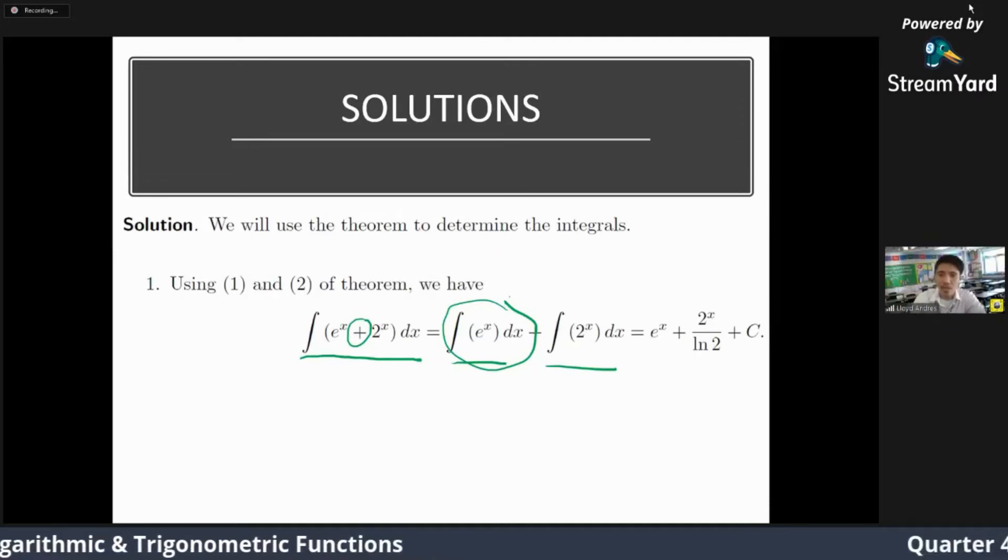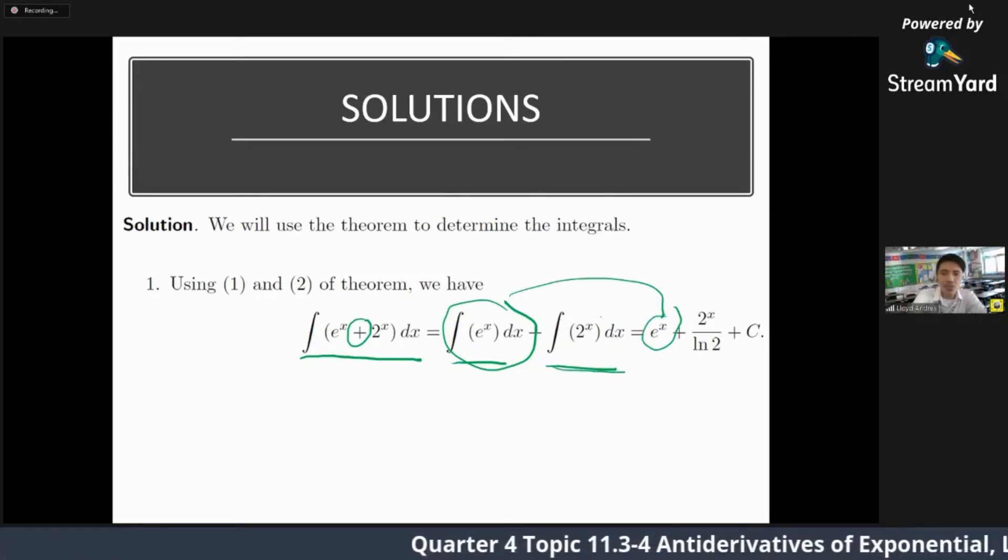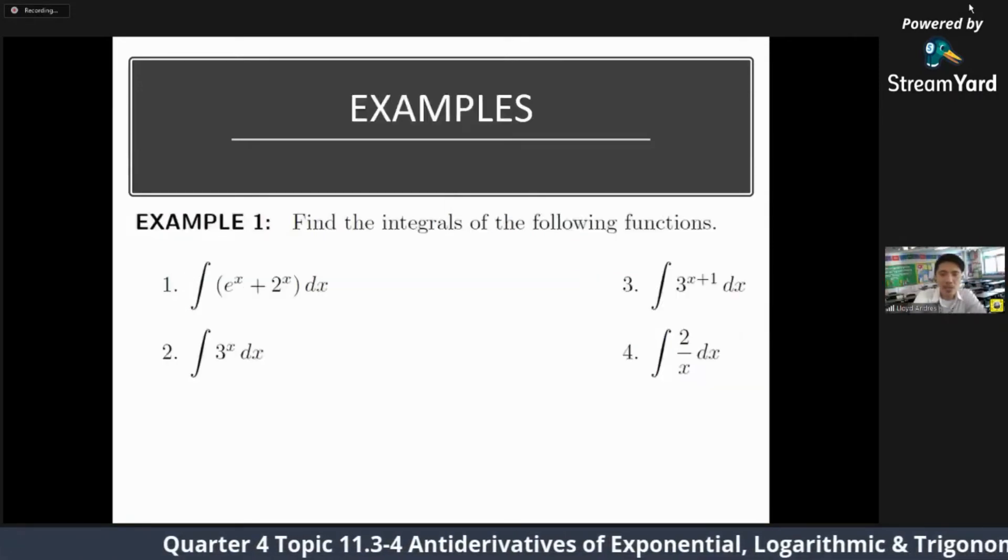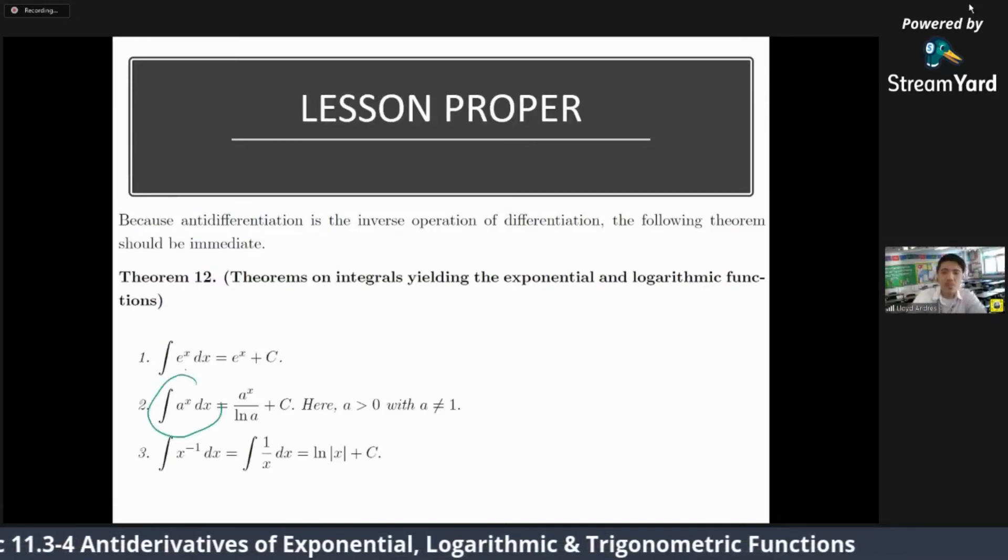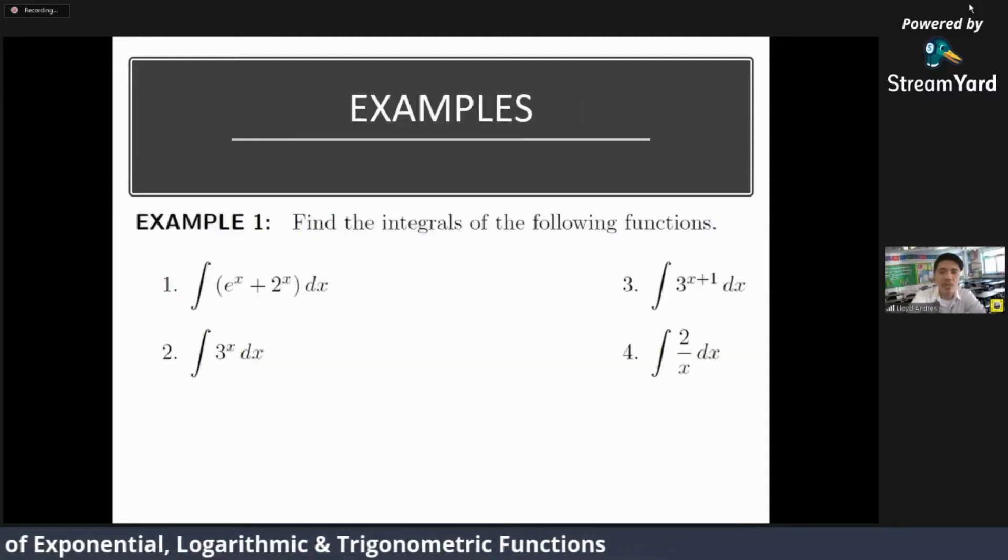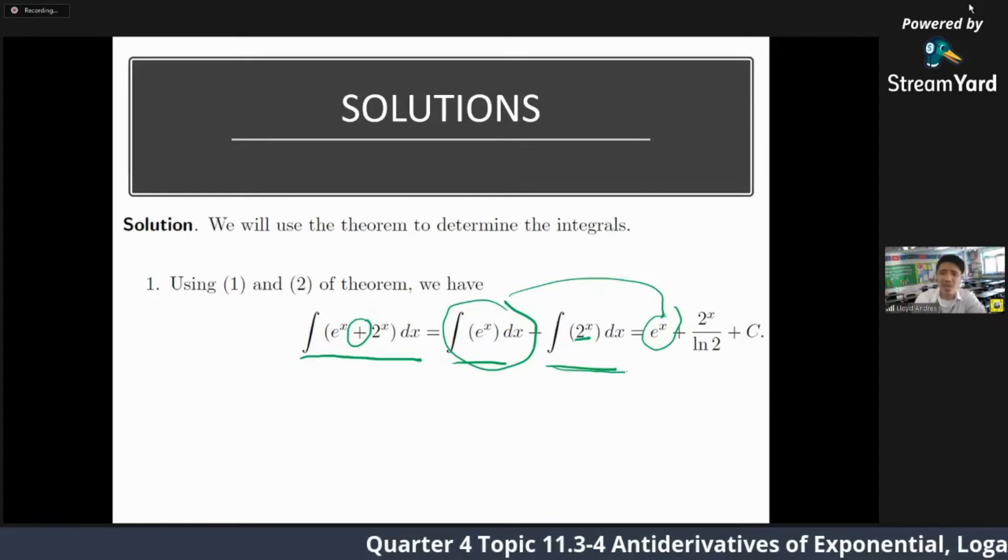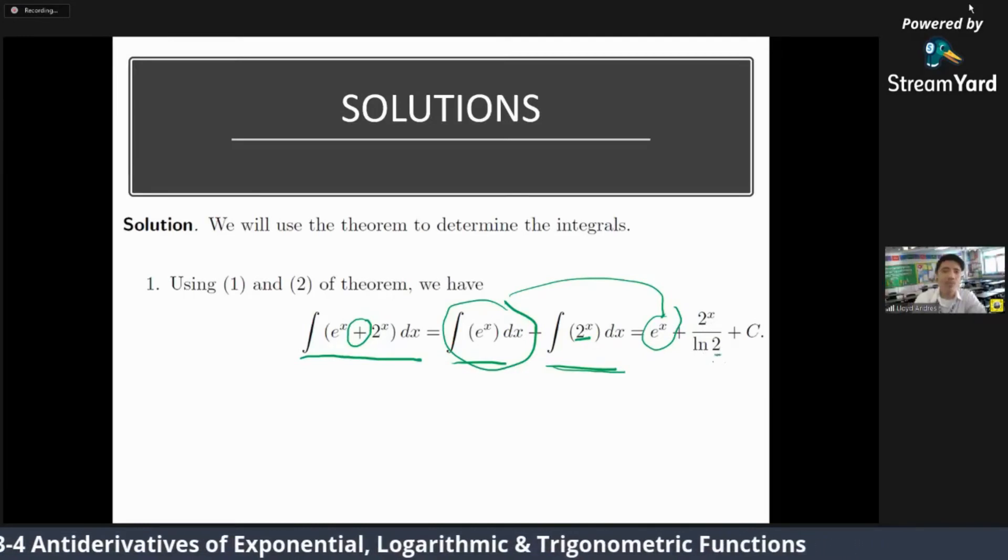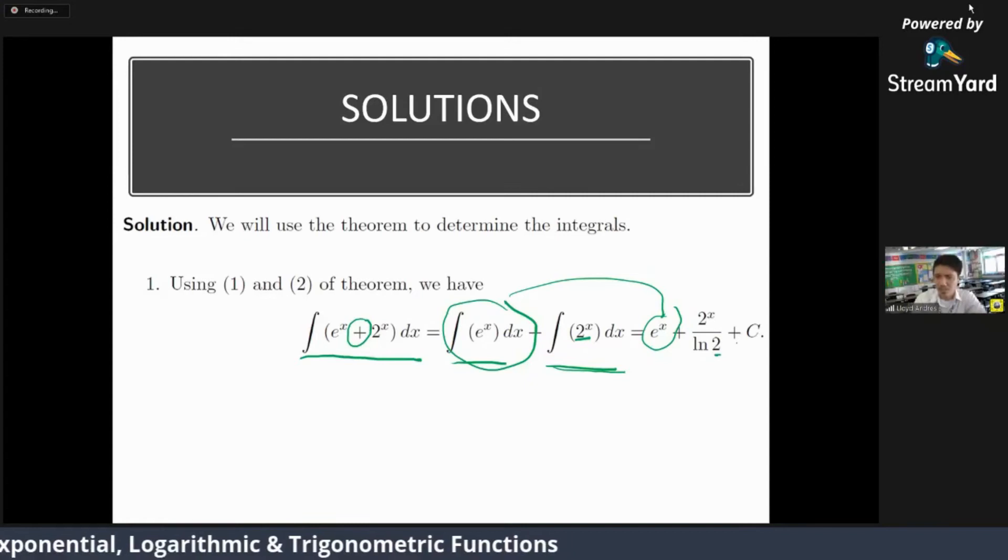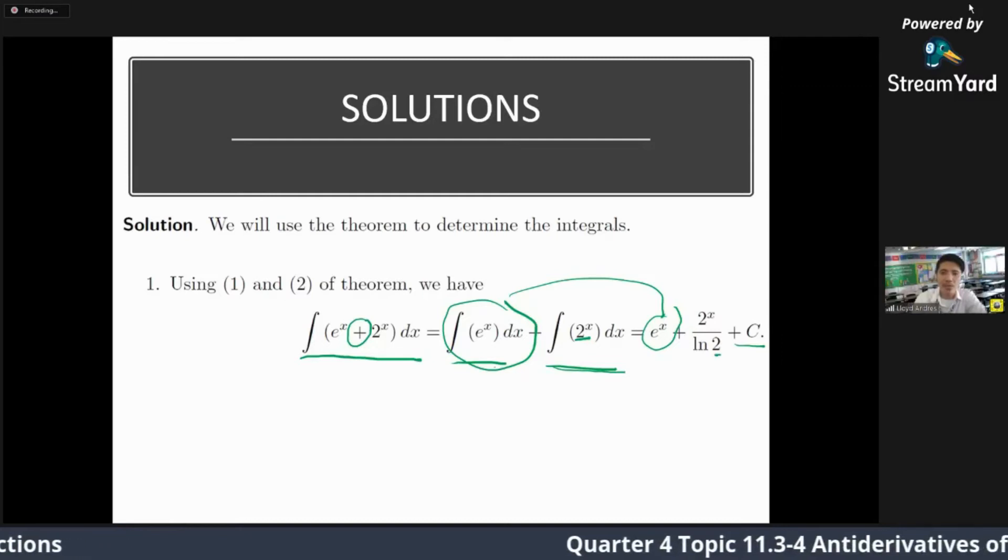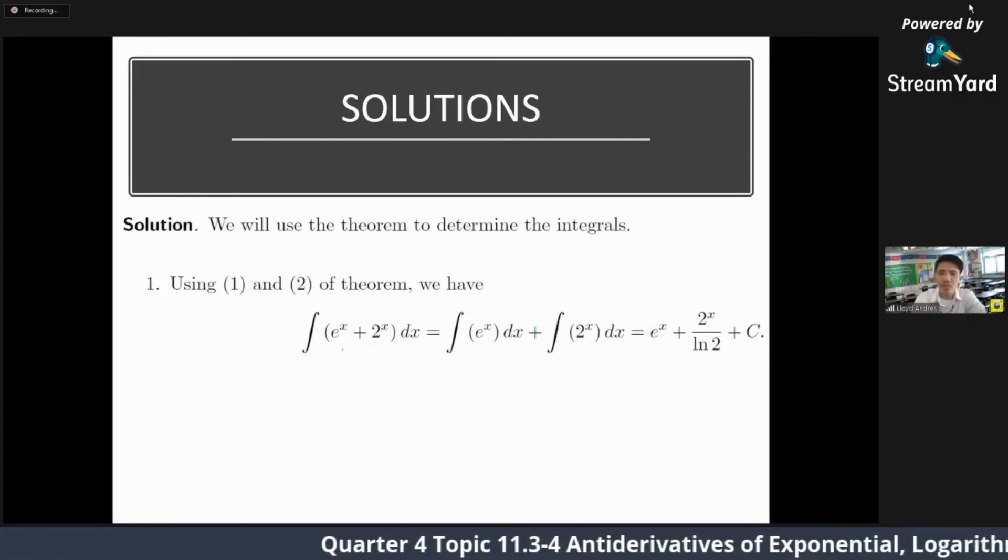Then integrating this one, we know this integral, the integral of e raised to x dx is just e raised to x. So it becomes e raised to x. Well, for this one, we use the second theorem, which is this. It's in the form a raised to x. Why do we call it in the form a raised to x? Because the base is constant. So again, the integral of a raised to x, just copy this 2 raised to x over ln of 2, the base. And again, don't forget to add plus c.